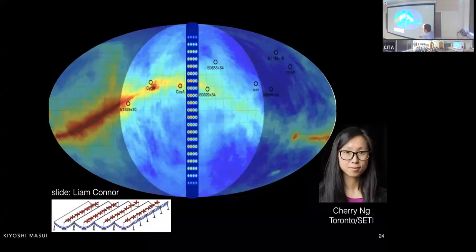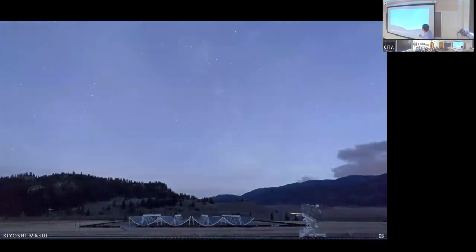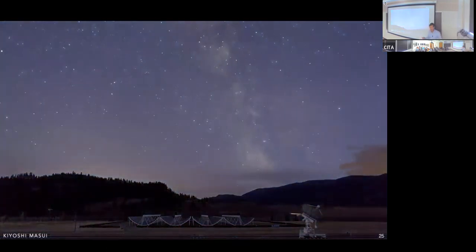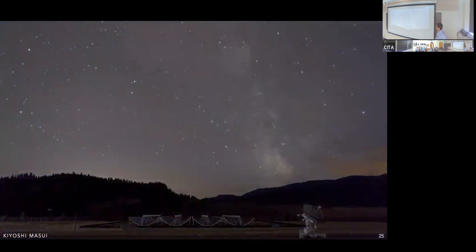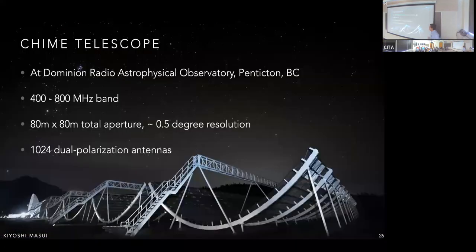CHIME has no moving parts — it looks straight up all the time, steering only at the meridian. Fortuitously, the Earth turns, allowing CHIME to map the entire northern hemisphere every single day.